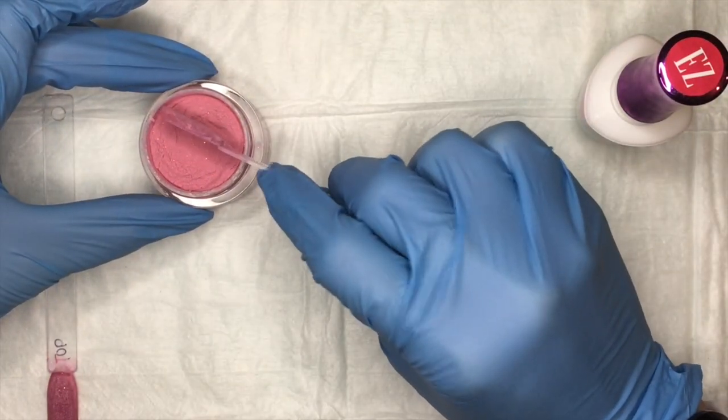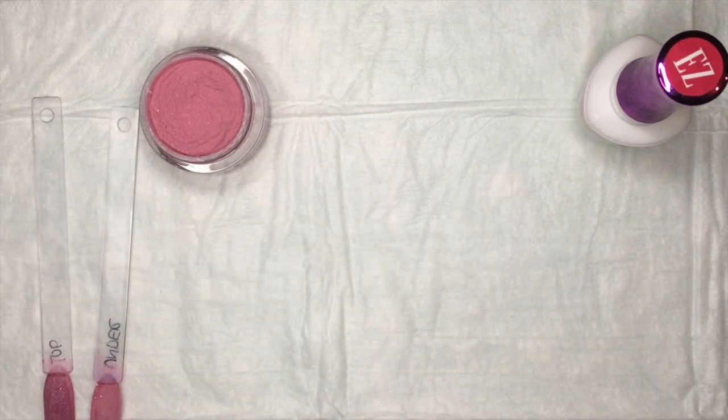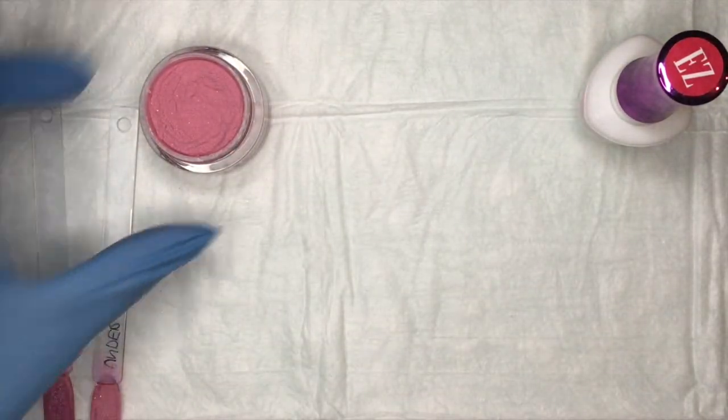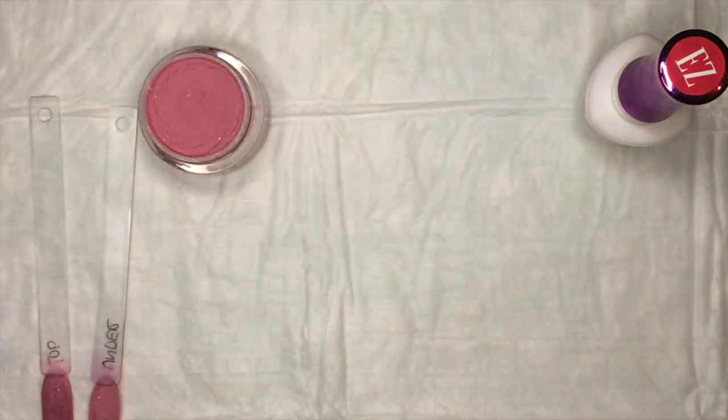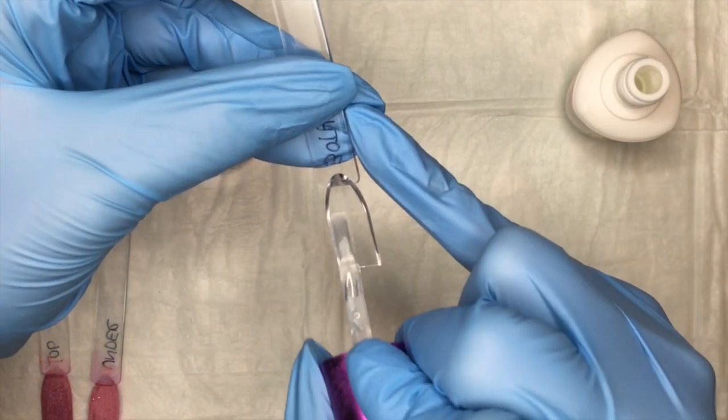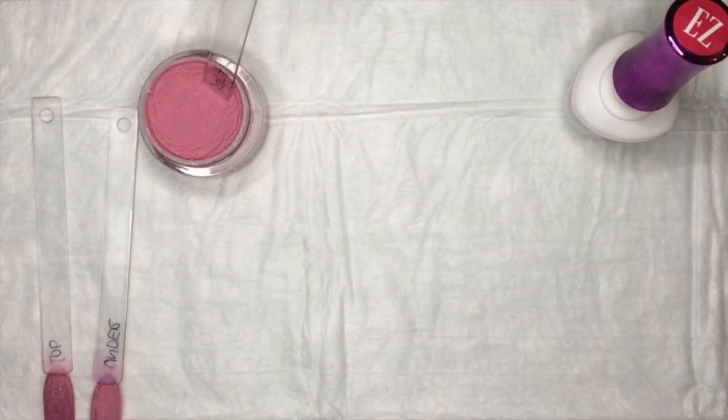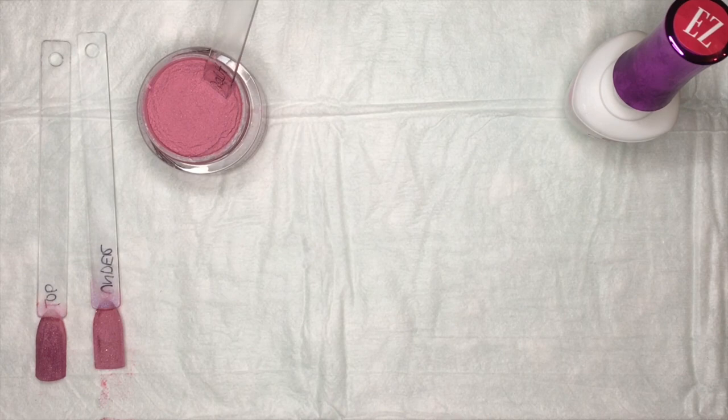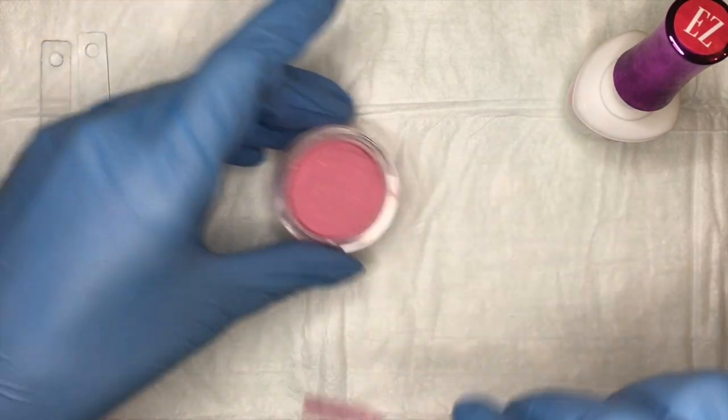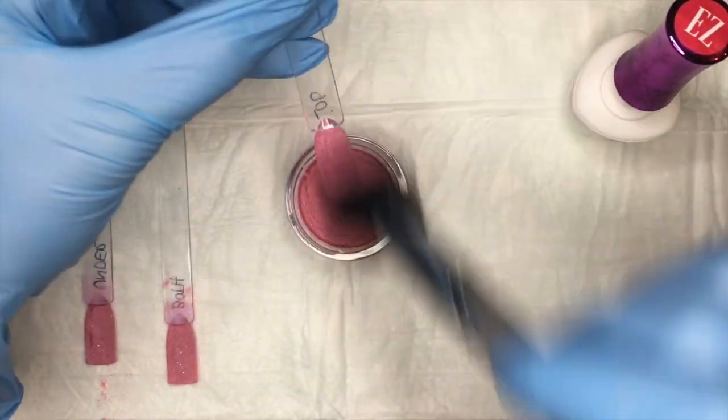And then we're going to move on to both. So the both method is kind of the same thing as under. I'm going to stir up the powder again just to make sure it's nice and fluffy. And then I'm just going to take the probase and paint it on the underside of the swatch stick.